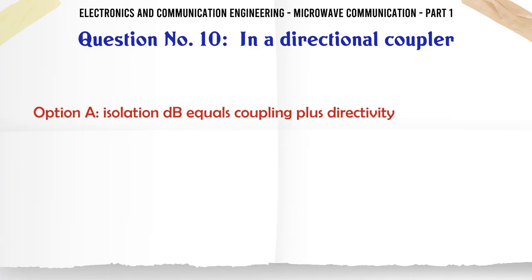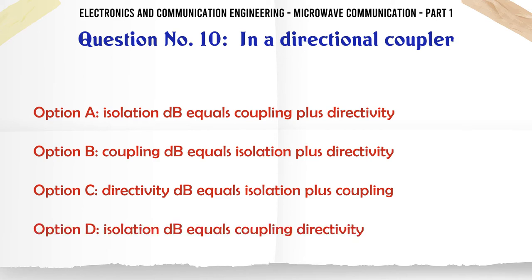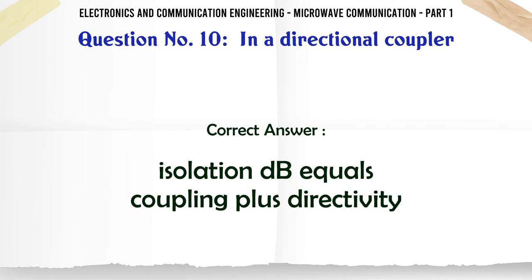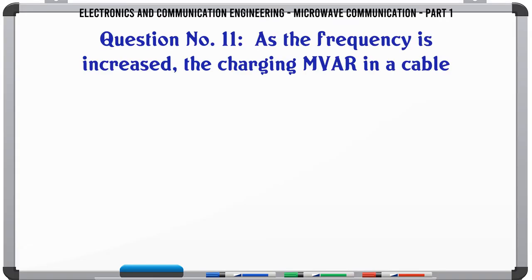In a directional coupler: A. Isolation dB equals coupling plus directivity, B. Coupling dB equals isolation plus directivity, C. Directivity dB equals isolation plus coupling, D. Isolation dB equals coupling directivity. The correct answer is Isolation dB equals coupling plus directivity.